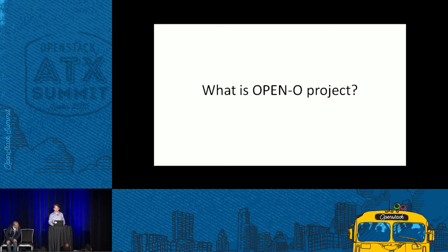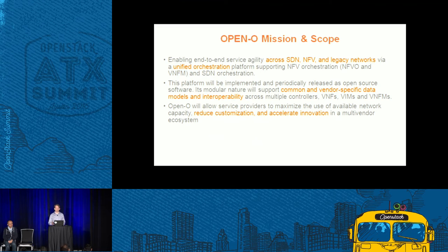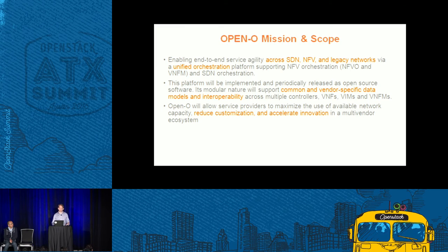Let's talk a little deeper about OpenO — our mission and scope. This slide is from our charter document. Our real goal is any service on any network — across SDN, NFV, and legacy networks. Second, we want to be model-driven, supporting common and vendor-specific data models and interoperability across different controllers, different VNFs, different VIMs, different VNFMs. As just mentioned, we want to reduce customization and accelerate innovation in the multi-vendor ecosystem.